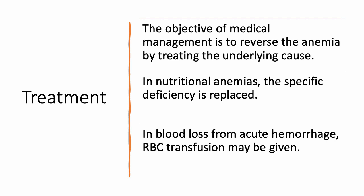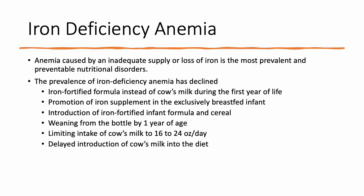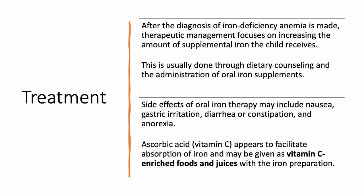The objective of treating anemia is to identify the underlying cause and reverse it while addressing any acute needs that the patient has. For example, if you had acute blood loss, you may need a transfusion of packed red blood cells. Iron deficiency anemia is one of the most common kinds of anemia. We see this a lot in toddlers who drink too much milk and therefore don't get iron in their diet from other sources.